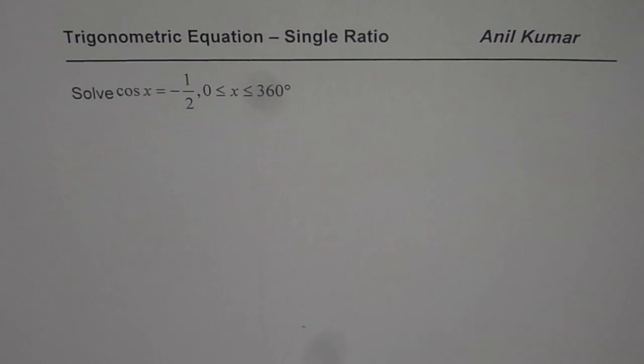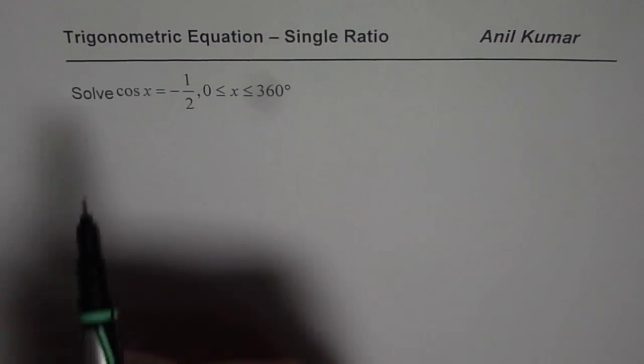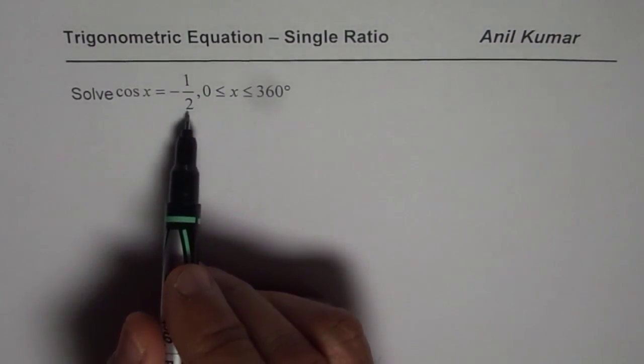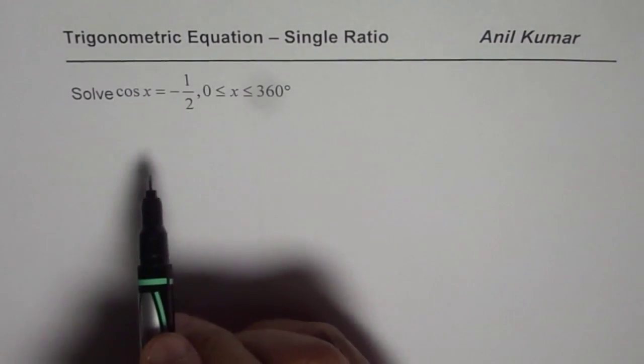We will solve this equation in different ways. So we have cos x equals minus half and domain is from 0 to 360 degrees.